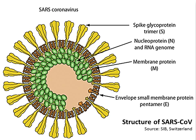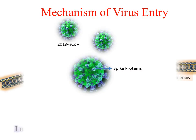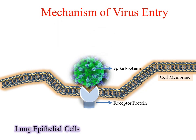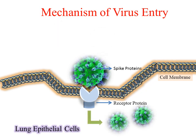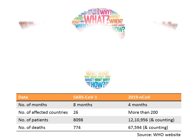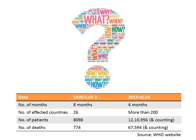Coronavirus is a highly contagious virus that causes infection to the human respiratory system by binding to lung epithelial cells. Coronavirus have spike proteins on their surface through which they attach to host cells and gain entry into them. The infectivity of the 2019 novel coronavirus is unimaginably higher than all previous known coronaviruses, and the reasons are largely unknown till today.